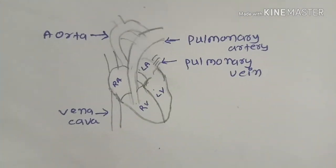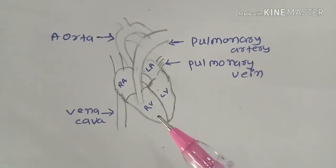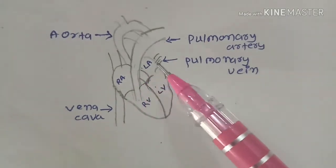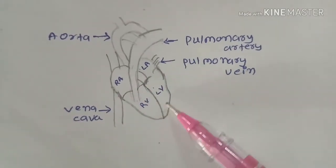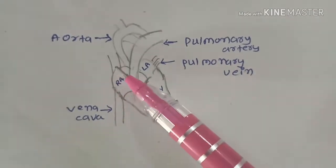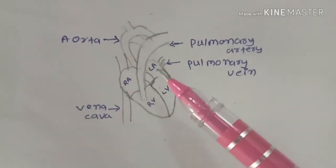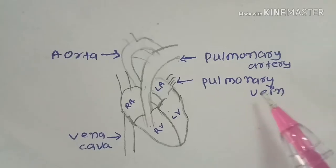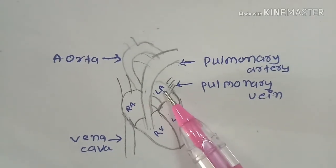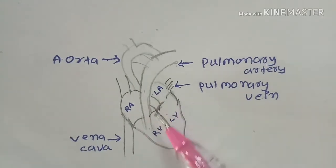Let us understand it through a diagram. This diagram shows the anatomical structure of the heart and blood vessels. This is the right atrium, this is the left atrium, this is the right ventricle, and this is the left ventricle. This is the superior and inferior vena cava. This is the pulmonary vein, which drains blood to the left atrium, and this is the right ventricle from where the pulmonary artery arises.